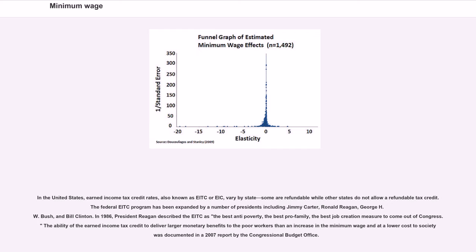In the United States, earned income tax credit rates vary by state. Some are refundable while other states do not allow a refundable tax credit. The federal aid program has been expanded by a number of presidents including Jimmy Carter, Ronald Reagan, George H.W. Bush, and Bill Clinton. In 1986, President Reagan described the EITC as the best anti-poverty, the best pro-family, the best job creation measure to come out of Congress. The ability of the earned income tax credit to deliver larger monetary benefits to the poor — beyond what an increase in the minimum wage could deliver and at a lower cost to society — was documented in a 2007 report by the Congressional Budget Office.